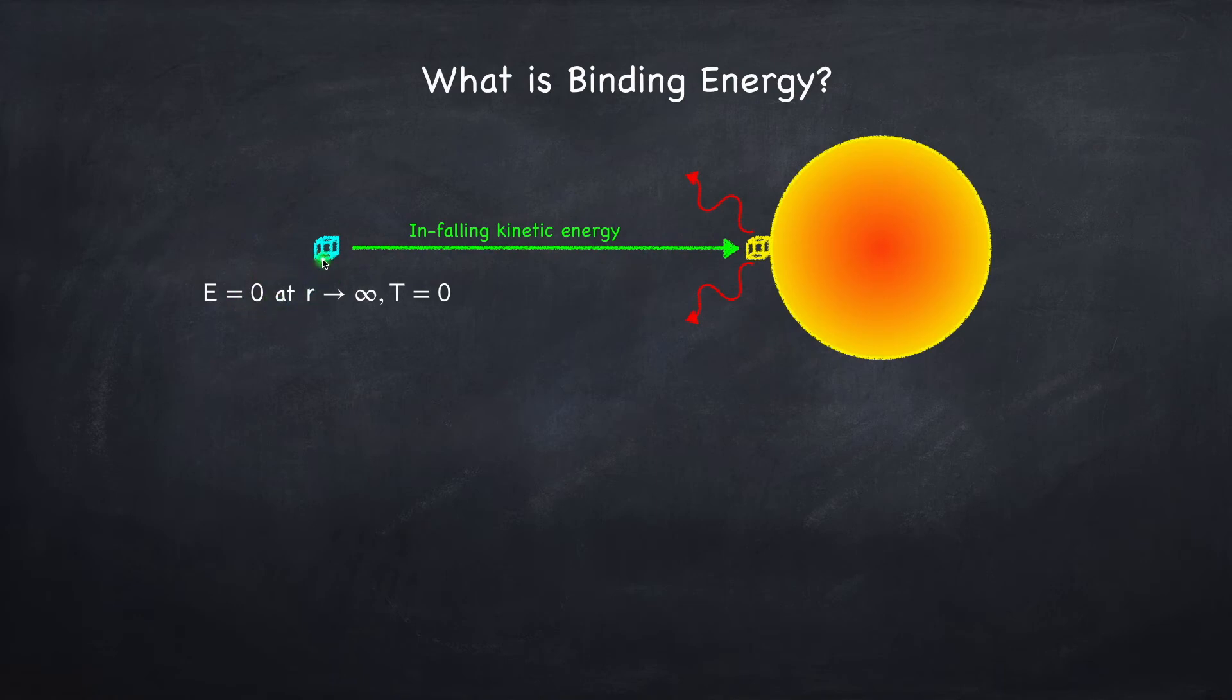We then imagine that this mass falls in, trades off gravitational potential energy for kinetic energy and comes to sit at the surface of the star at some finite temperature. Since it's now stationary, it's lost all its kinetic energy. And this energy was either transferred into heating up the material or was lost in radiation.